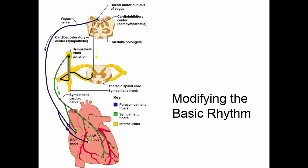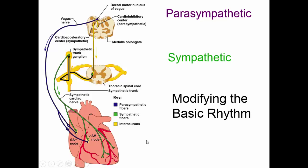The basic rhythm of the heart can be modified by the nervous system. The parasympathetic nervous system has fibers on the vagus nerve that go to the SA and AV nodes. The parasympathetic system releases acetylcholine, which has the effect of slowing down impulses. The sympathetic nervous system has nerves that go to the SA node, AV node, and muscle cells of the ventricles. The sympathetic system uses norepinephrine, which increases both the rate and the contractility of the heart.